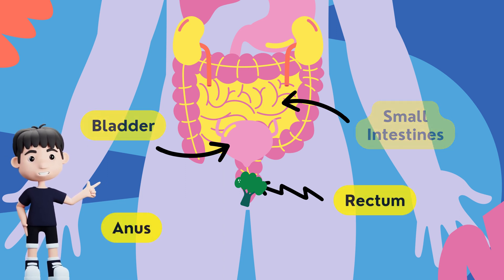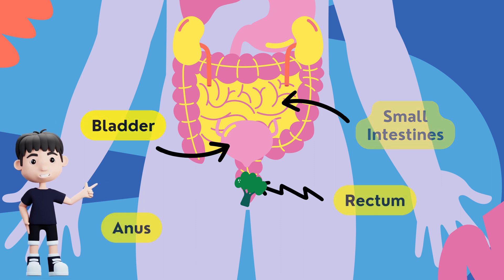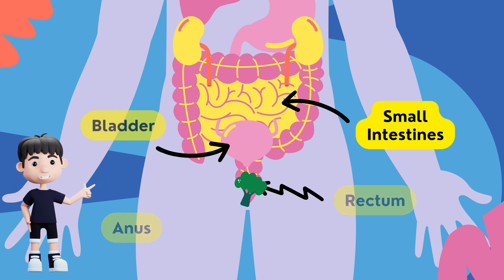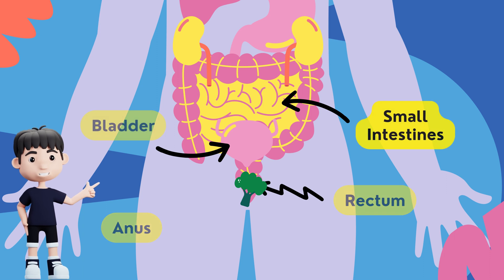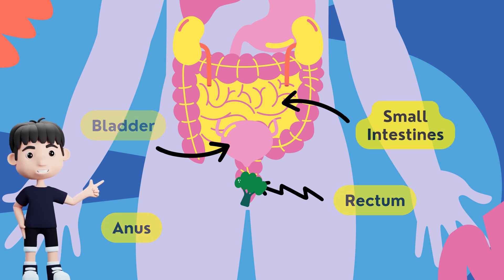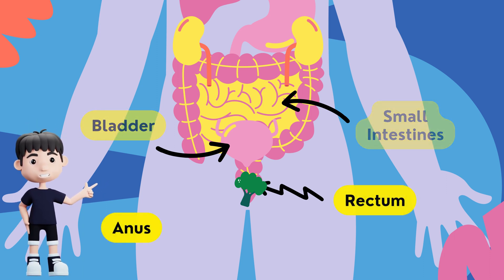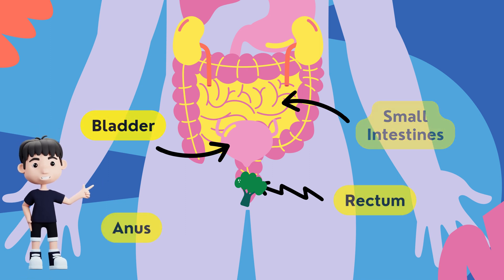Small intestines. It helps to further digest food coming from the stomach. It absorbs nutrients — vitamins, minerals, carbohydrates, fats, and proteins — and water from food so that they can be used by the body.